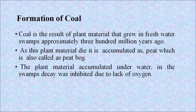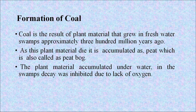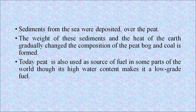Coal is the result of plant material that grew in freshwater swamps approximately 300 million years ago. As this plant material died, it accumulated as peat, also called peat bog. The plant material accumulated underwater in swamps where decay was inhibited due to lack of oxygen. Sediments from the sea were then deposited over the peat, and the weight of these sediments and the heat of the earth gradually changed the composition of the peat bog — and coal is formed.